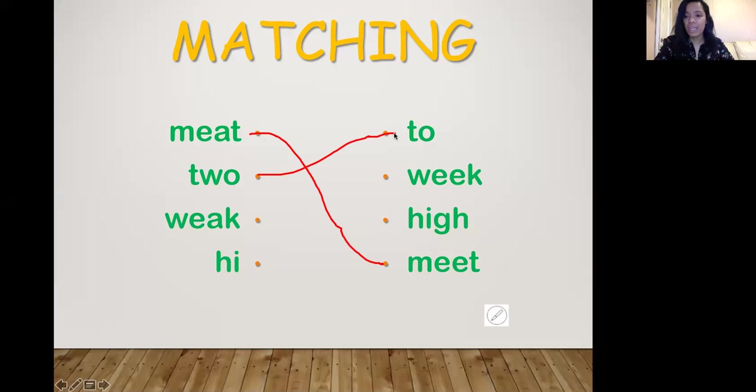And then we have weak. Weak is the opposite. This weak is the opposite of strong. I'm weak. I'm not strong. And it matches to week as in days of the week. Here we have hi and high. Hi. And then we have high as in how high can you go? Here we go. Well done.